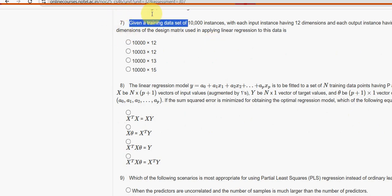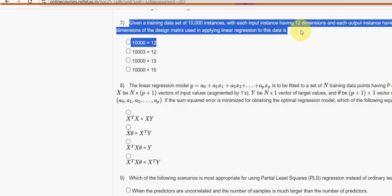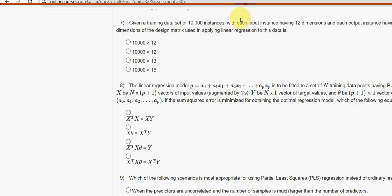Given a training dataset of 10,000 instances with each input instance having 12 dimensions and each output instance having three dimensions, the dimensions of the design matrix used in applying linear regression to this data is: 12 plus 1 equals 13, 13 into number of instances 10,000. So it is the third option.